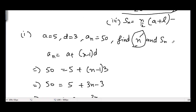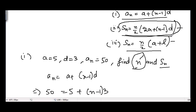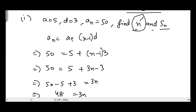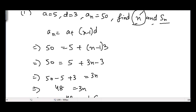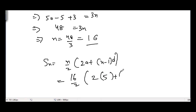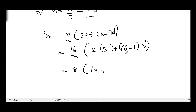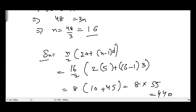Now we need to find S_n. We can use S_n equals n divided by 2 times (2a plus (n minus 1) times d). Substituting n equals 16, a equals 5, and d equals 3: S_n equals 8 times (10 plus 15 times 3) equals 8 times (10 plus 45) equals 8 times 55, which equals 440. That is the sum of n terms.